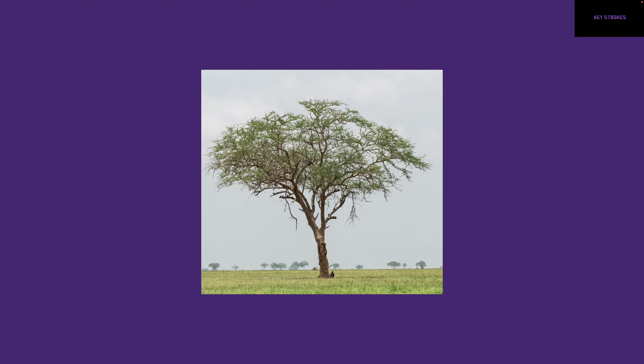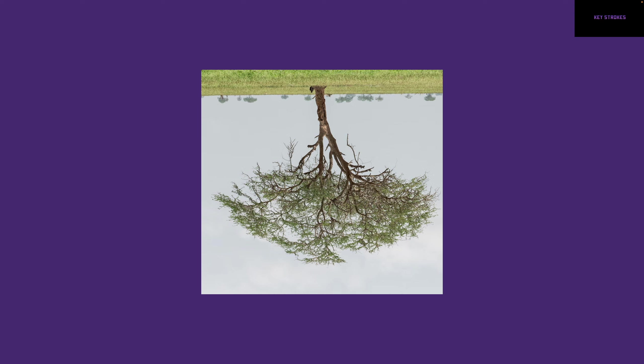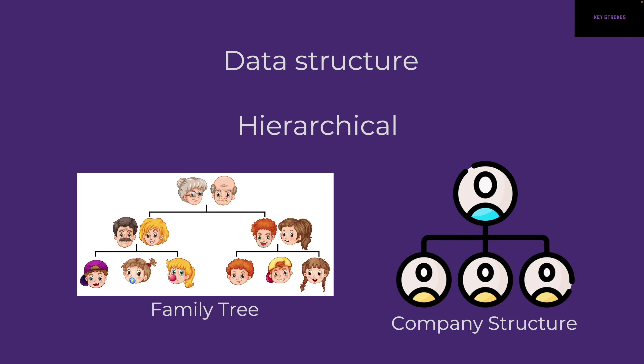So let's start with: what is a tree? If I had to visualize a tree, this is what I would think — and actually, let's flip this upside down because this is a more accurate representation of the tree data structure we're going to talk about. A tree is a data structure, which basically means it's just a structured way to organize data, and it stores a hierarchy of data. Some examples are a family tree, which starts with grandparents on top, then their kids, and their kids — or a company structure where you have a CEO and then people under that CEO.